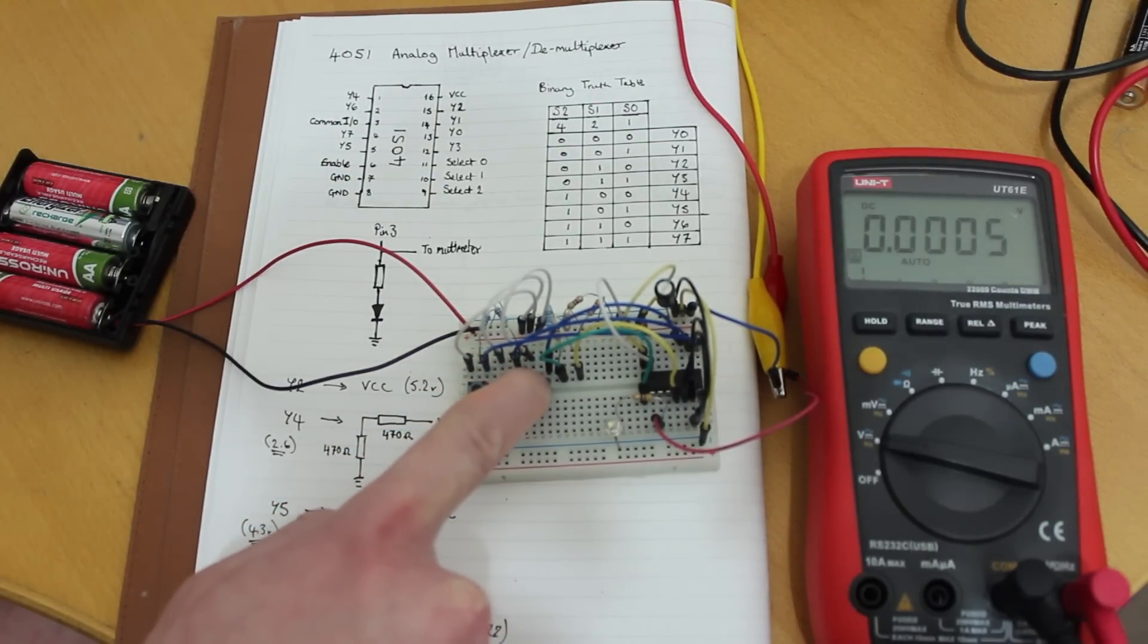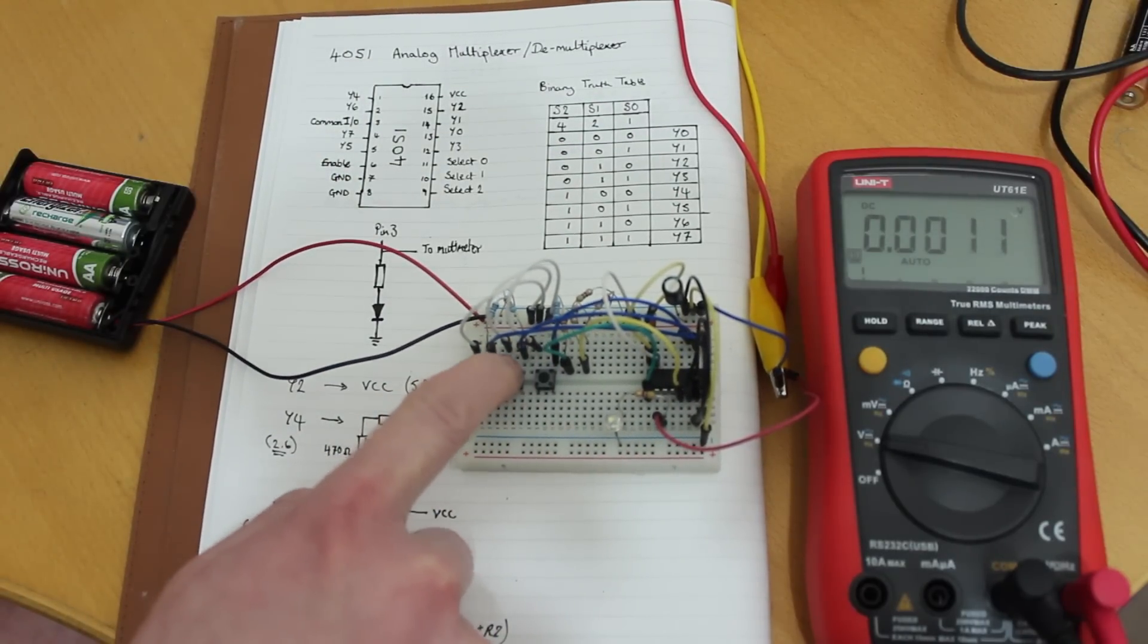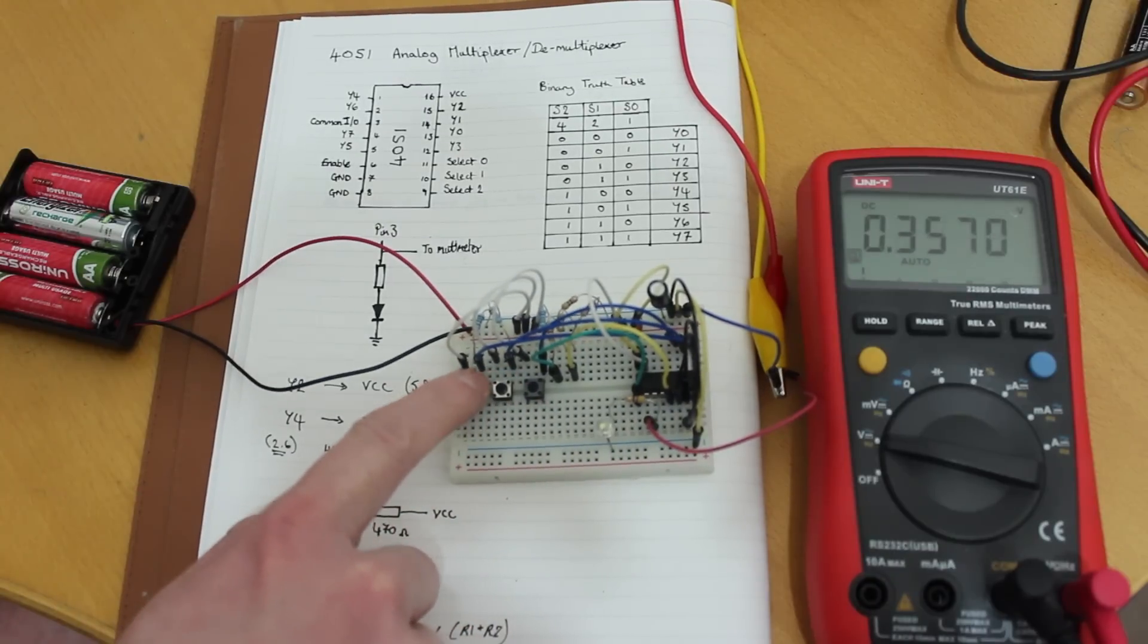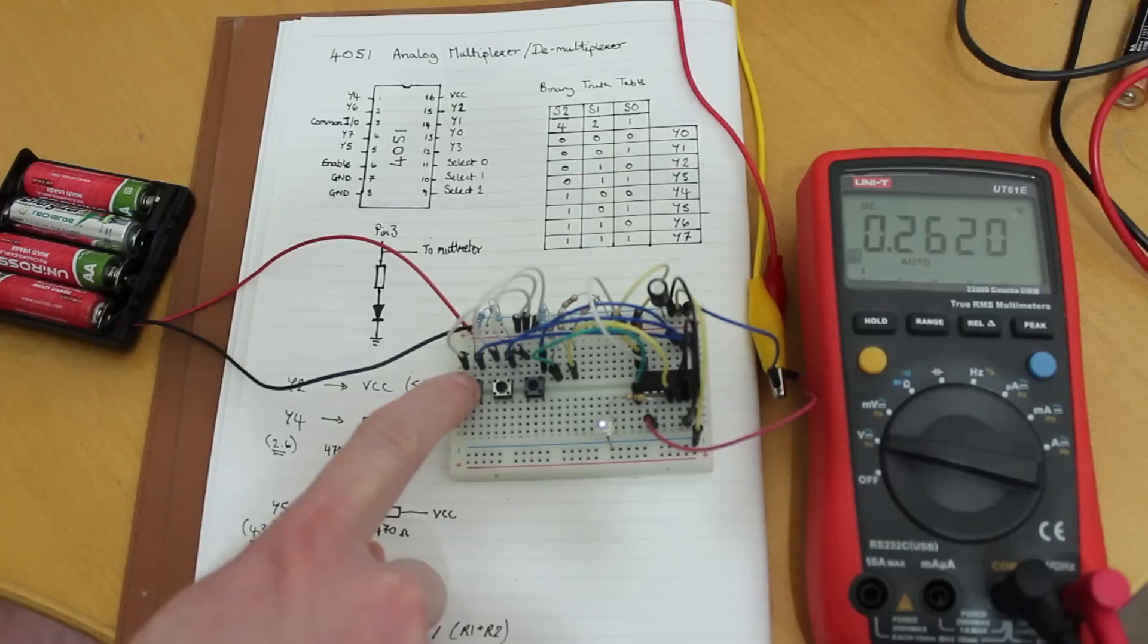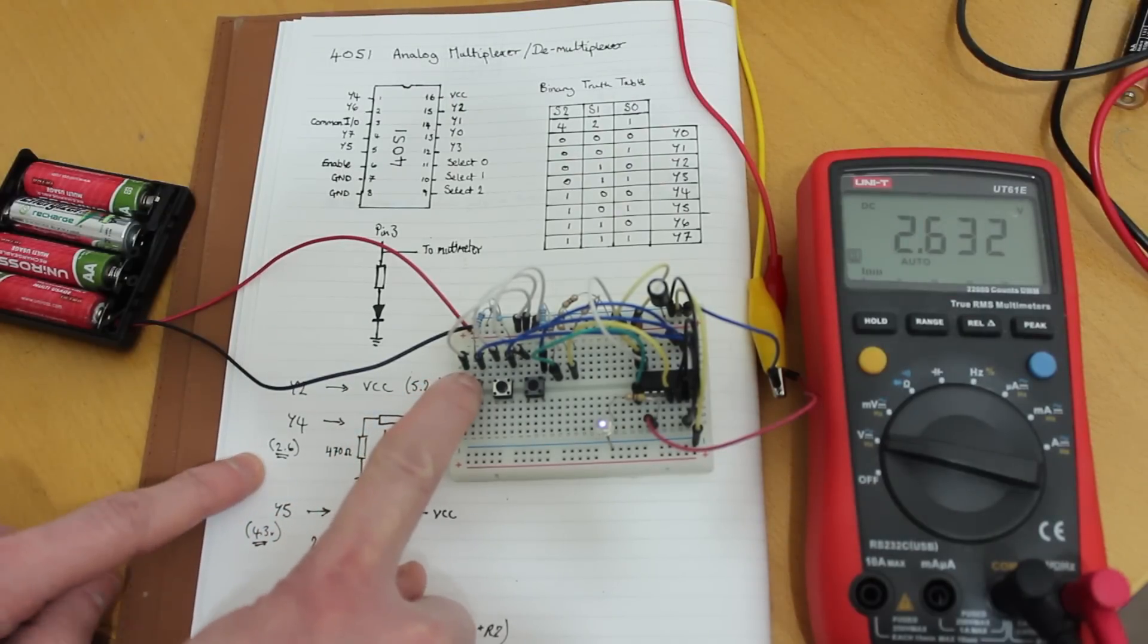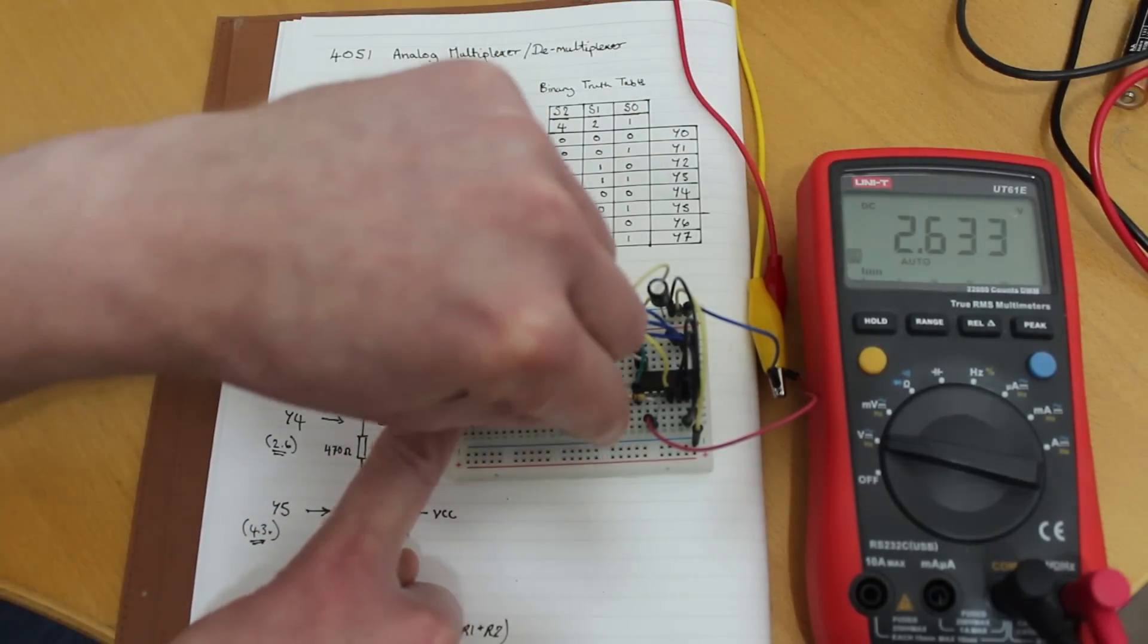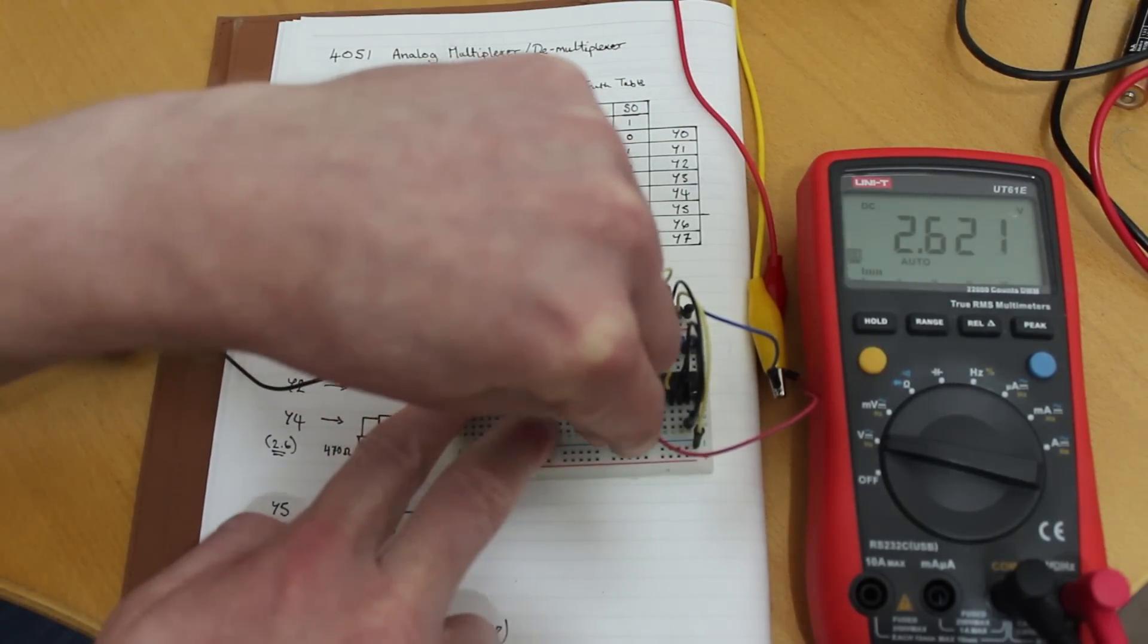In pin 1, we have nothing. In pin 2, we've got our VCC. And in pin 4, that's Y4, we've got this 2.6 volts. And if I pull out the LED, it won't drop too much because it's not drawing a lot of current.